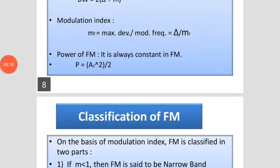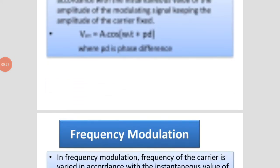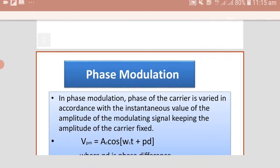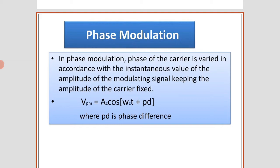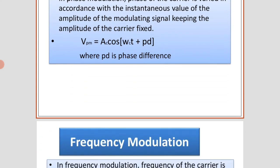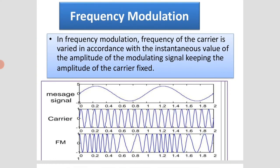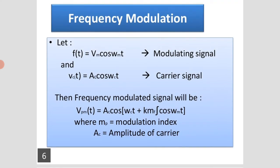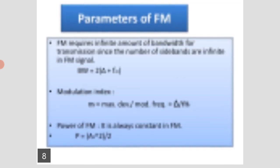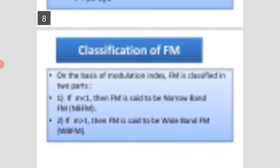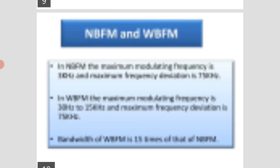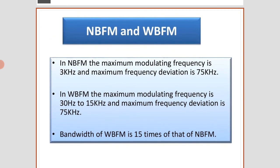In today's video lecture, we saw frequency modulation and phase modulation. The definition of phase modulation: the phase of the carrier signal is varied in accordance with the input signal. In frequency modulation, the frequency of the carrier signal changes according to the modulating signal. We also covered the equation of FM, the parameters of FM, and the classification of FM into narrow band frequency modulation (NBFM) and wide band frequency modulation (WBFM).